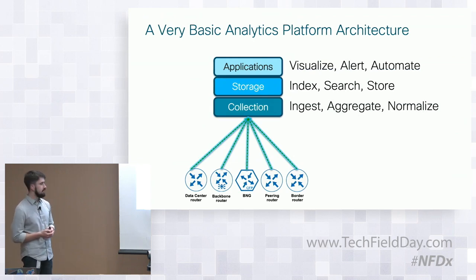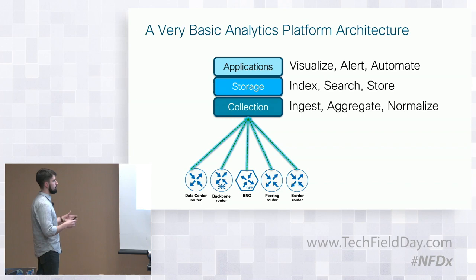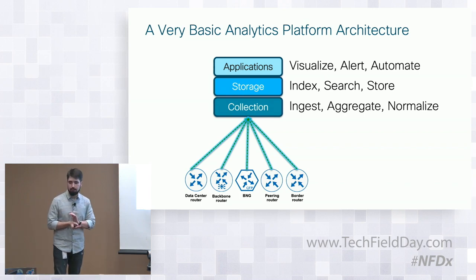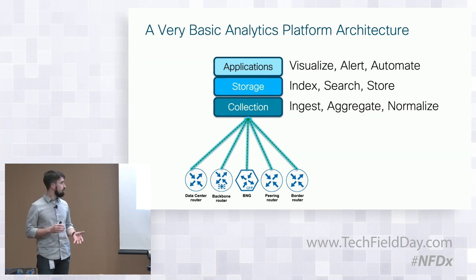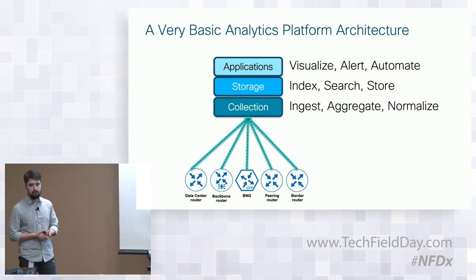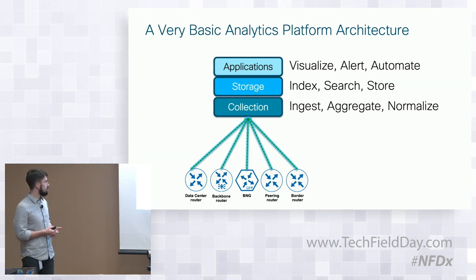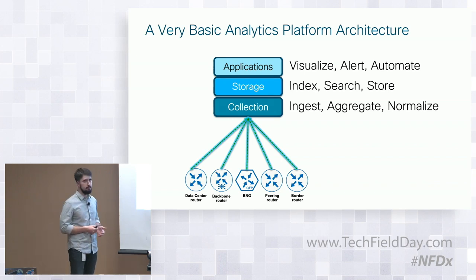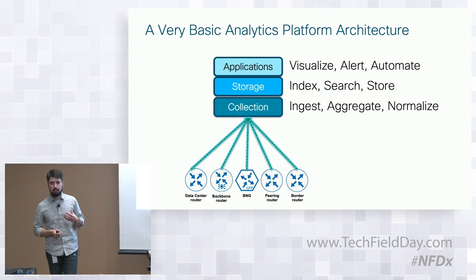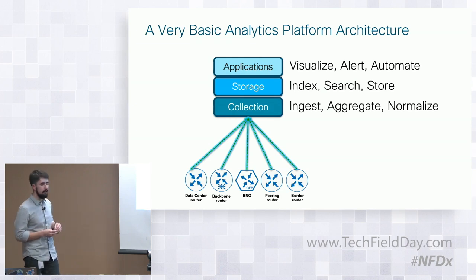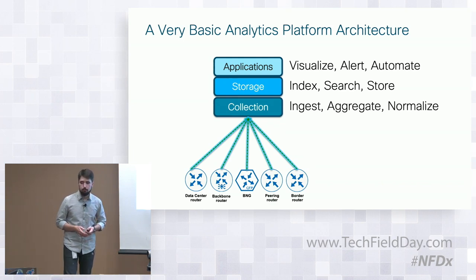Once we collect all the data, we need multiple steps to work with it: collecting is the first, then aggregate and normalize, after which we proceed with storage. With storage, we can build an index, do some searching, or configure a retention policy depending on how long we want to keep data in the database. Once data is stored, we proceed with applications on top of it — visualization, alerting or notification mechanisms, or automation techniques to make a closed loop with telemetry.